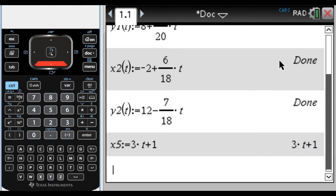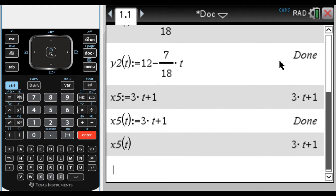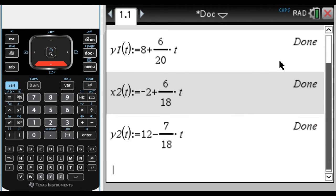So when you do define this, you want to do x5(t), and then colon equals, and then 3t + 1. And now if you do x5 of t, you notice that it says done instead of just repeating the expression. And also if you do x5 of t, the calculator returns what we want. So that's the biggest mistake that I see people make, and it does lead to that error where the name is not a function.